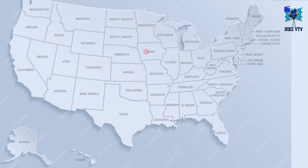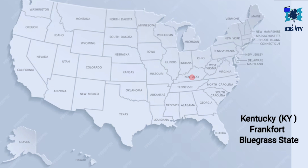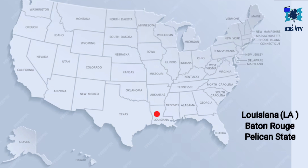Next state is Kansas, its abbreviation is KS, its capital is Topeka, and its time zone is CST, and its nickname is the Sunflower State. Next state is Kentucky, abbreviation is KY, its capital is Frankfort, its time zone is EST, and its nickname is Bluegrass State.